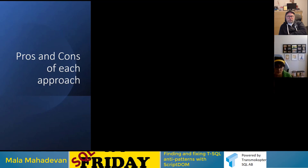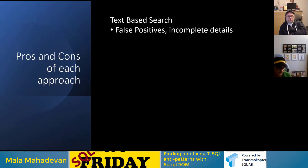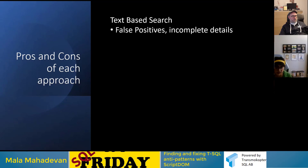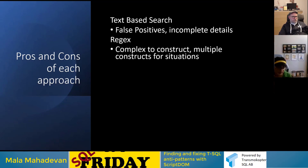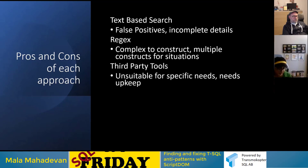Let's look at the pros and cons of each approach. Text-based search is highly unreliable — you can find stuff in comments, in code that's not currently in use. It won't give you details of where it found what. Regex is really complex to construct, not easily understandable by others, and you need a different regex pattern for every scenario — it gets too cumbersome. Third-party tools may not meet all your specific needs, and even forking someone's code can be hard if your environment is very specialized.